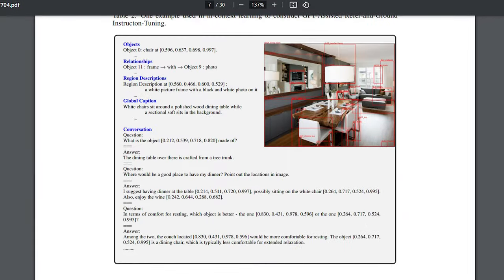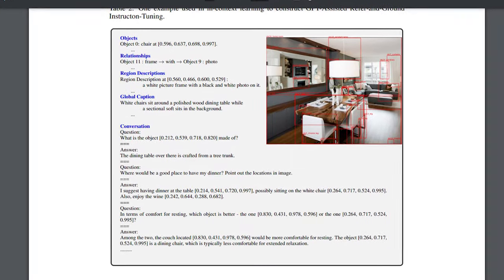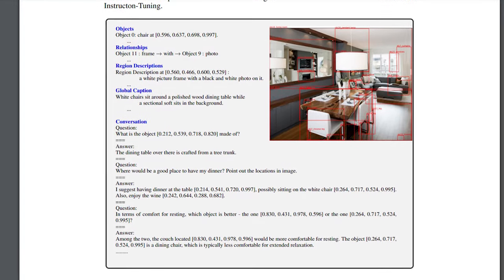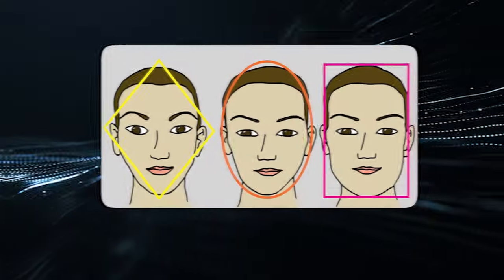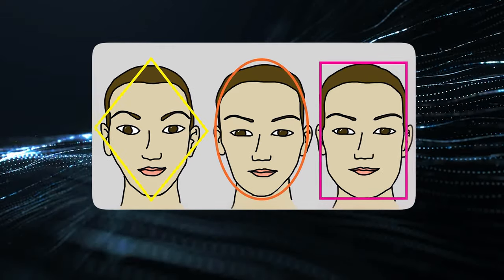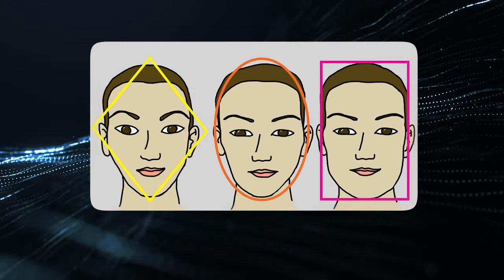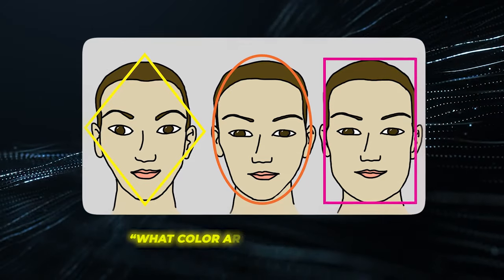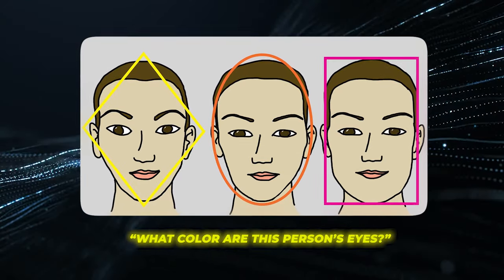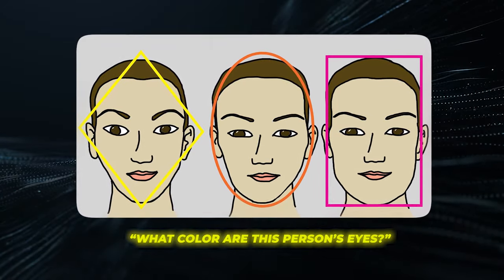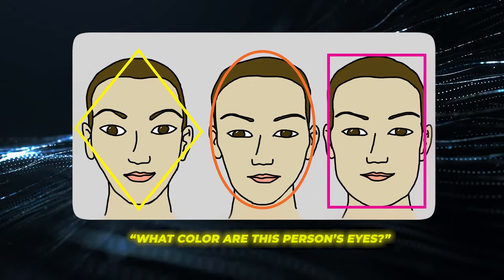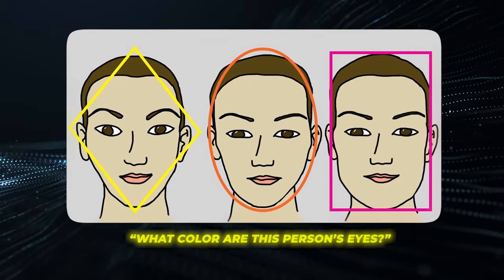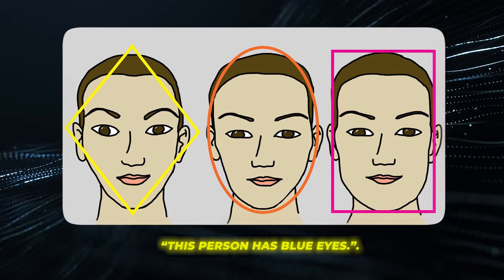Ferret's breakthrough capability is its skill to refer to and comprehend free-form regions of images specified by users. For instance, you could sketch an irregular shape enclosing a person's face in a photograph and question, "What color are this person's eyes?" Ferret would then identify the eyes within that marked area, discern they are blue, and reply, "This person has blue eyes."